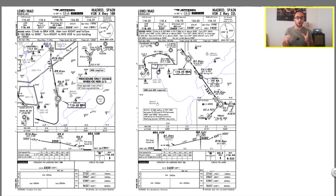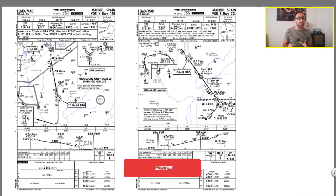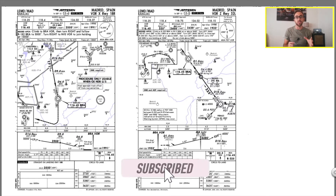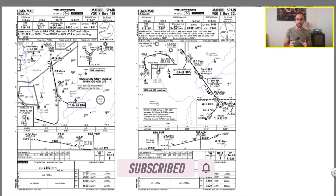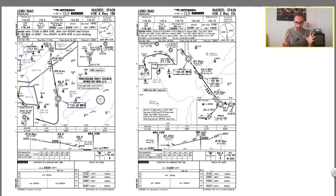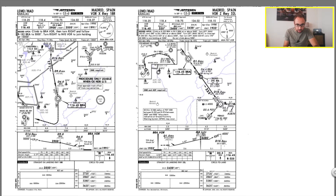Looking at the whiteboard, we've got two Jeppesen charts of Madrid Airport. These charts are out of date and are for training purposes only, but the final approach fix is identified in the same way even on charts of today. The final approach fix is identifiable by the Maltese Cross. I'm going to zoom in a little bit — so this cross here is your final approach fix.